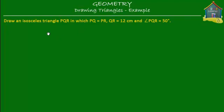What we'll do in this lesson is learn how to draw an isosceles triangle. In an isosceles triangle there are two sides that are of the same length. In this triangle PQR, PQ and PR are of the same length — they're equal. The third side QR is equal to 12 centimeters and angle PQR is equal to 50 degrees.